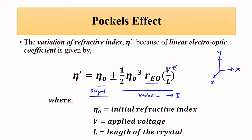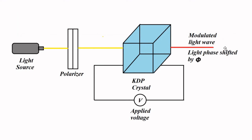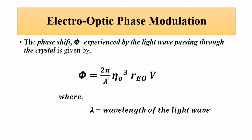The resultant phase modulation — the phase shift φ that the light wave suffers — is given by: φ = (2π/λ)·η₀³·r·E₀·V, where λ is the wavelength of the light wave, η₀ is the original refractive index, r·E₀ is the Pockels constant or linear electro-optic coefficient, and V is the applied voltage. This is the phase shift which we want to induce.